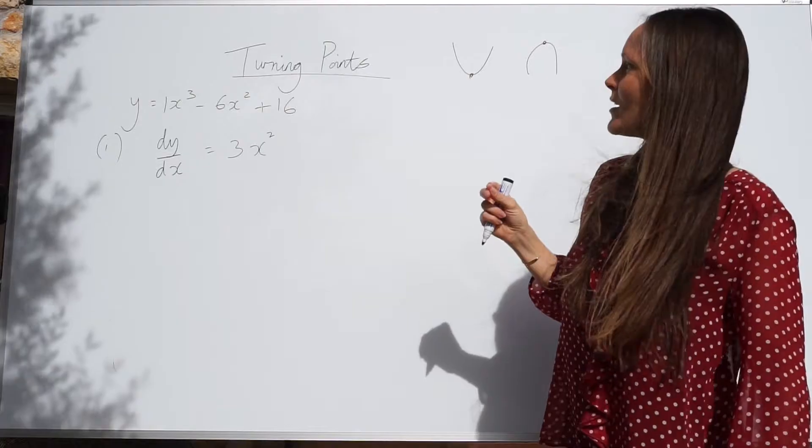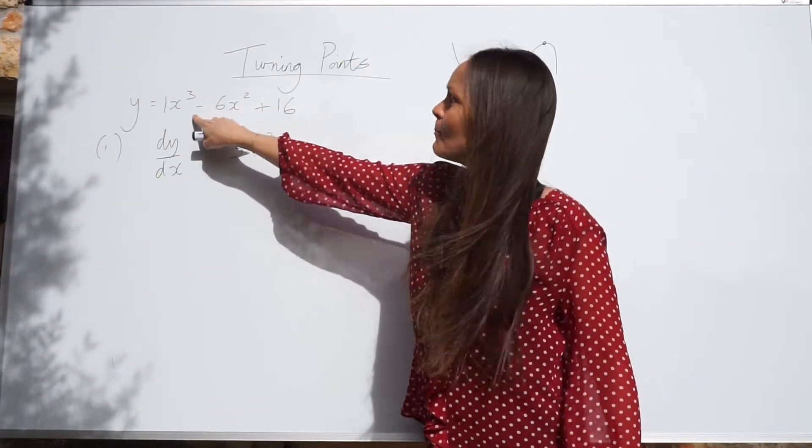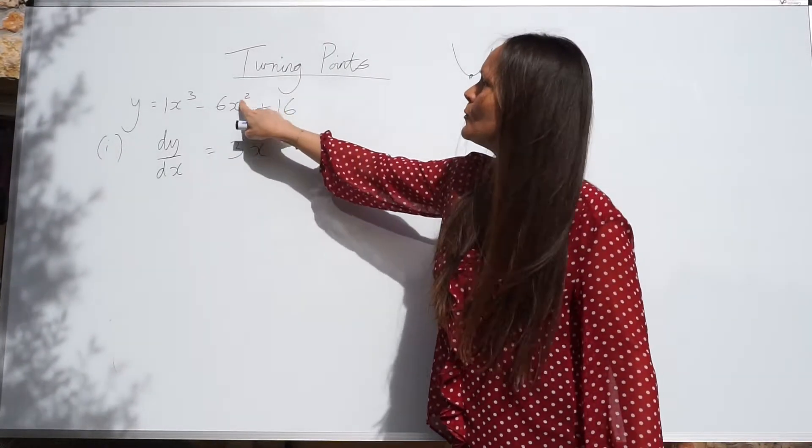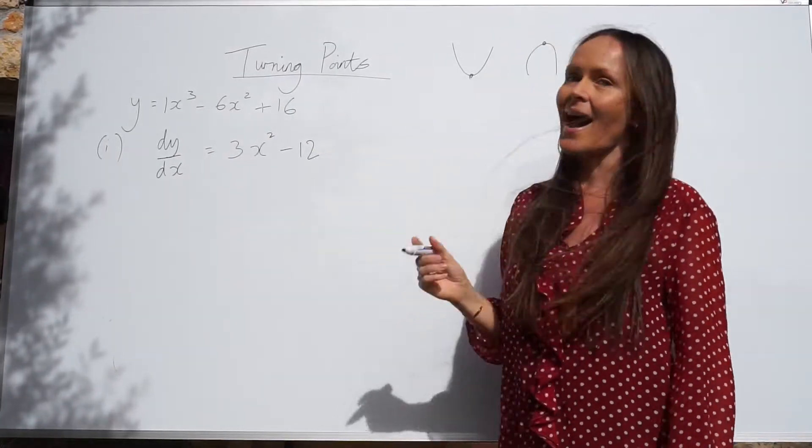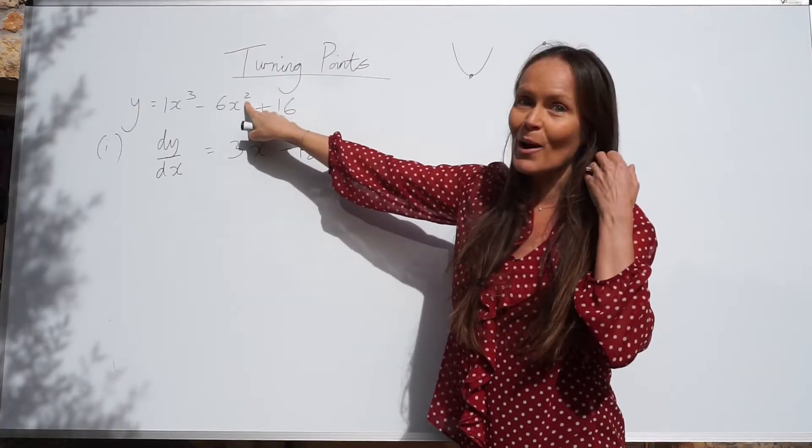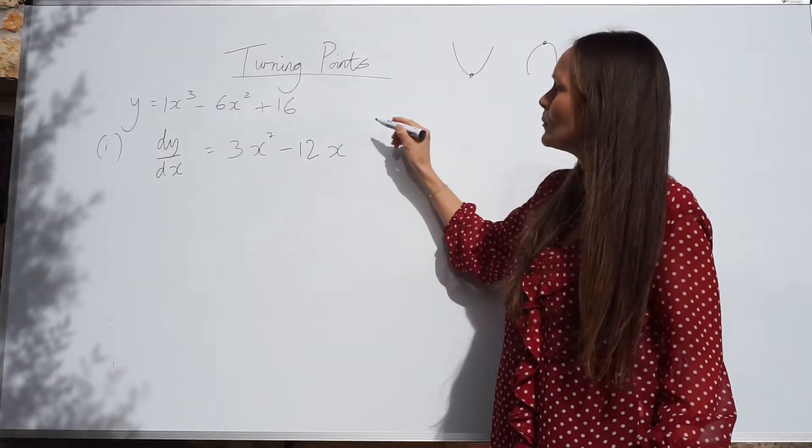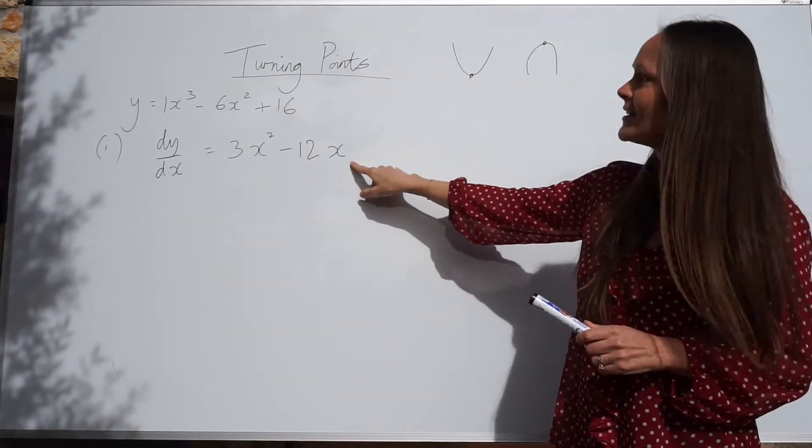For the next part, exactly the same idea. Look at the power of x and multiply that by the number directly in front of x squared. So 2 multiplied by negative 6 is negative 12. And just like before, the power decreases by 1. So 2 minus 1 is just 1, except we don't usually write the power of 1. We can just leave it as x. It's the same thing.